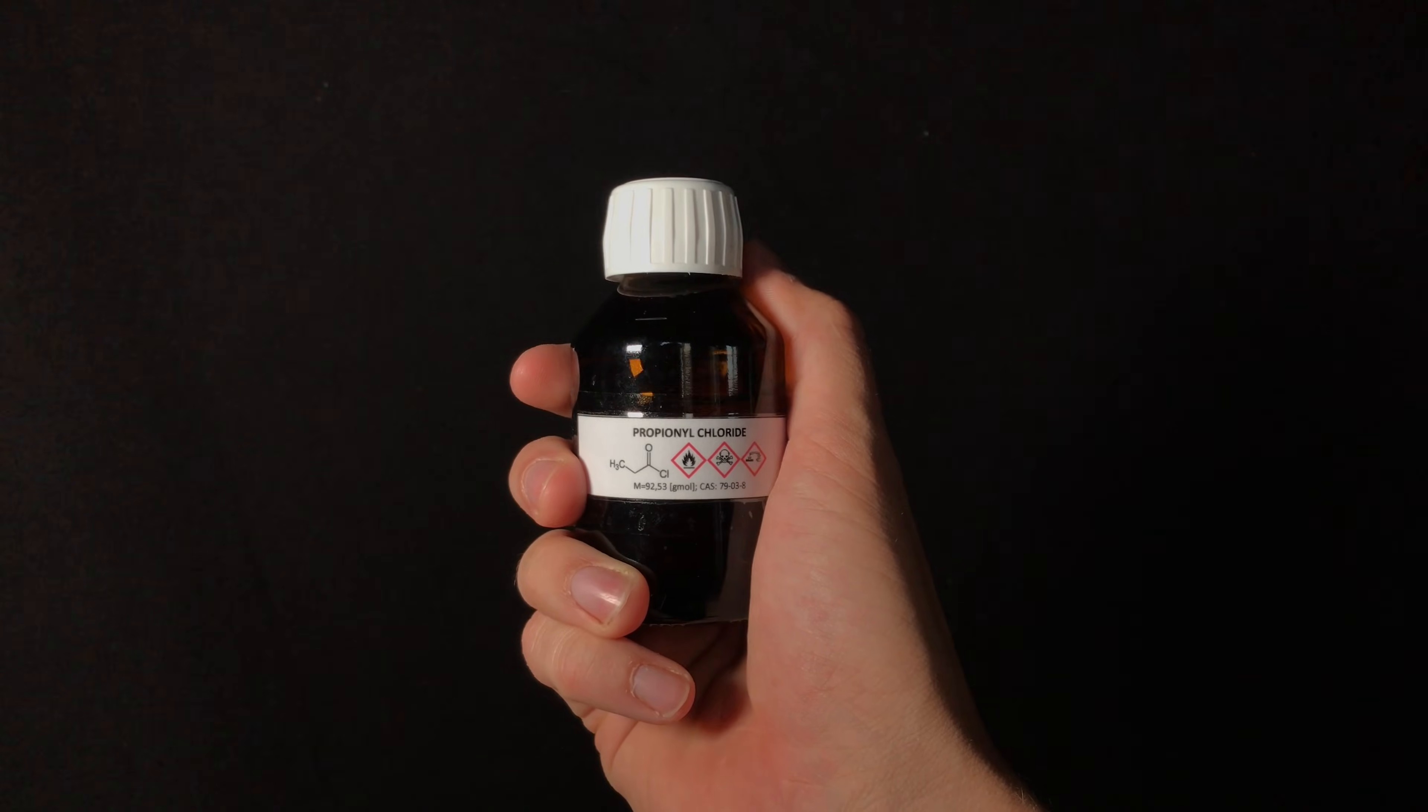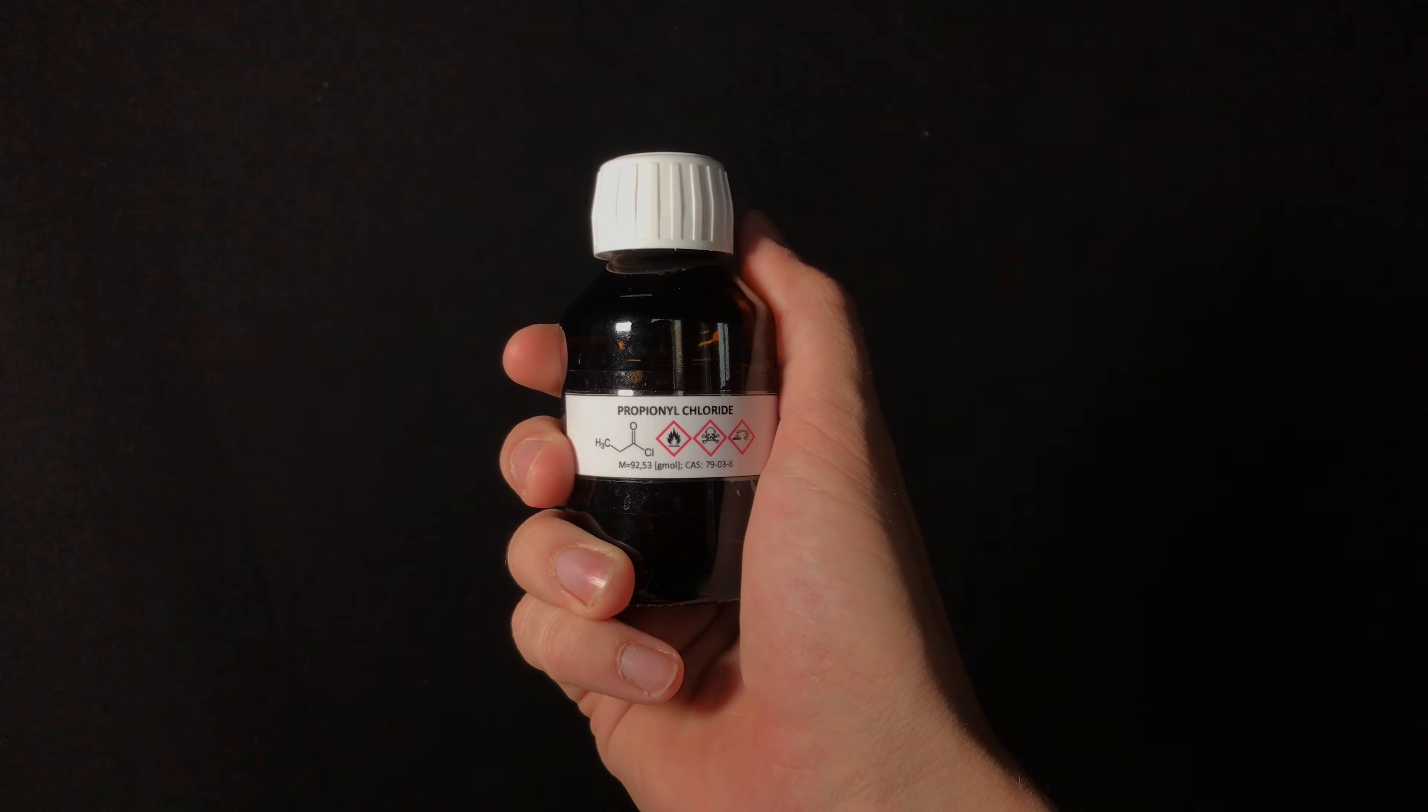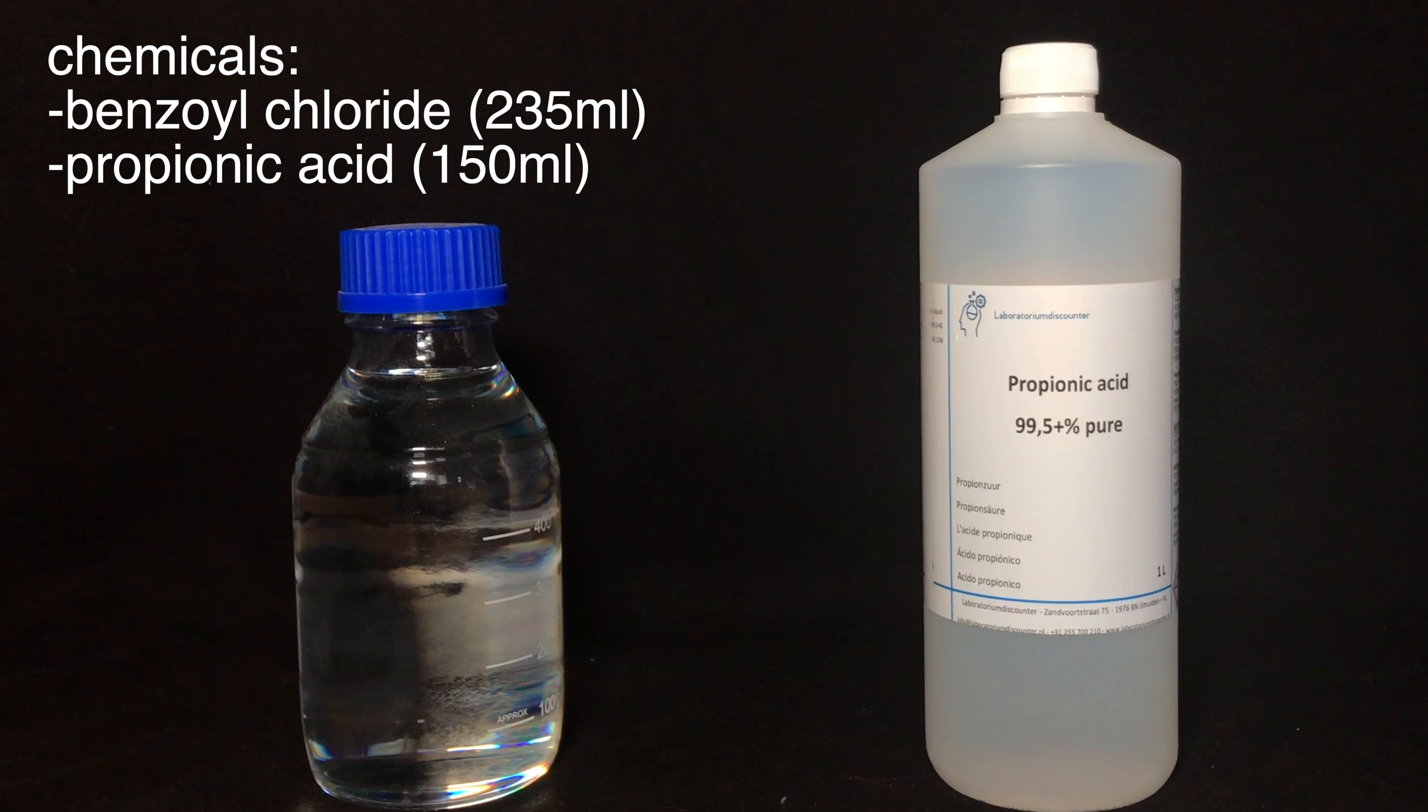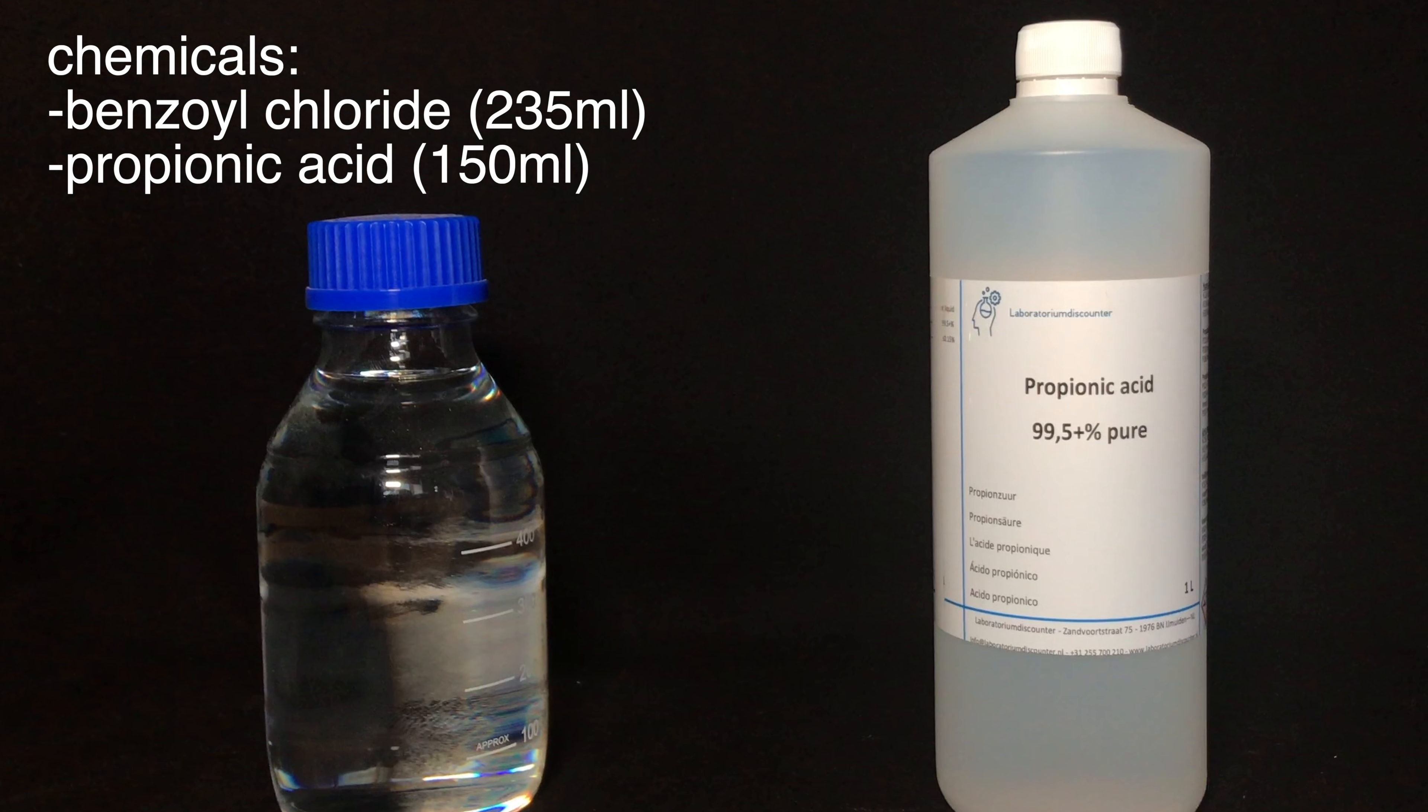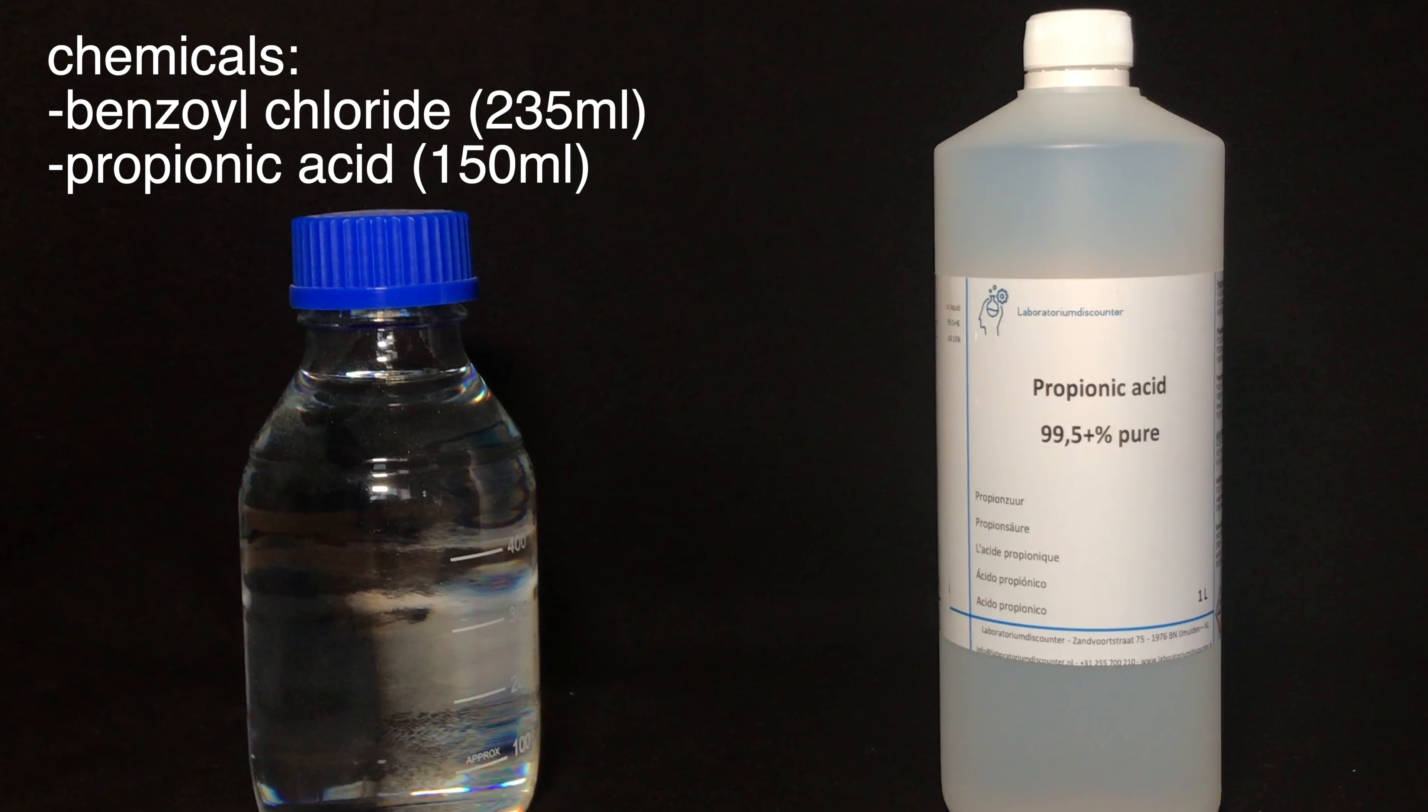Welcome everyone, today I will show you how to make propionyl chloride. This stuff can be used in chemistry to make esters very easily. For the preparation we are going to use a little over 2 moles of benzoyl chloride and exactly 2 moles of propionic acid.